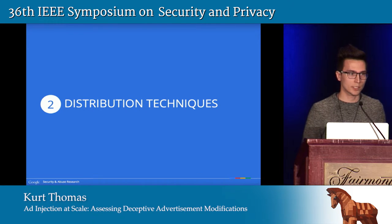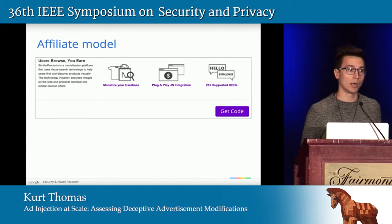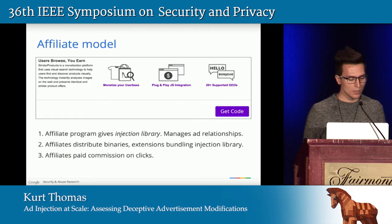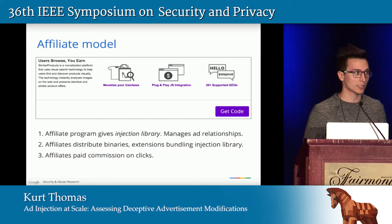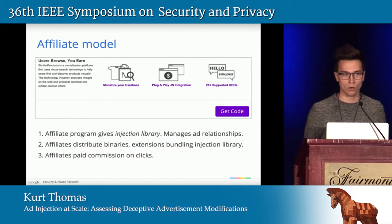Now that we know which scripts are being injected, how did they get there? It turns out Superfish operates on an affiliate model. The top ad injection scripts all say: you have a browser extension or popular software users are already installing — we'll help you monetize it with a drop-in JavaScript library. All you have to do is get it inside the user's browser, and we'll reward you. Affiliates provide the injection library managing advertisement selection and relationships; affiliates distribute the binaries or extensions via bundling, social engineering, or malware. Affiliates get paid for clicks or on a commission basis.